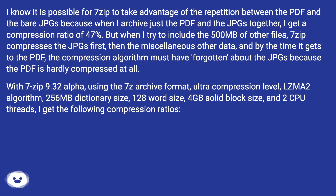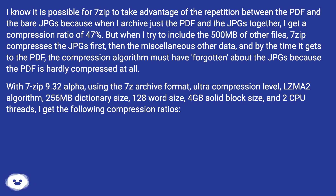By the time it gets to the PDF, the compression algorithm must have forgotten about the JPGs because the PDF is hardly compressed at all. With 7-zip 9.32-alpha, using the 7-Z archive format, ultra compression level, LZMA2 algorithm, 256 MB dictionary size, 128 word size, 4 GB solid block size, and 2 CPU threads, I get the following compression ratios.